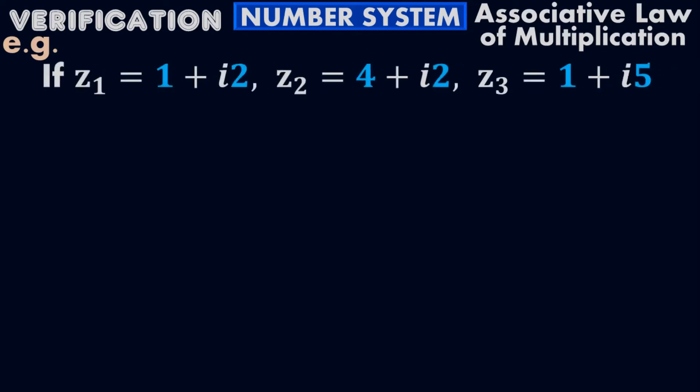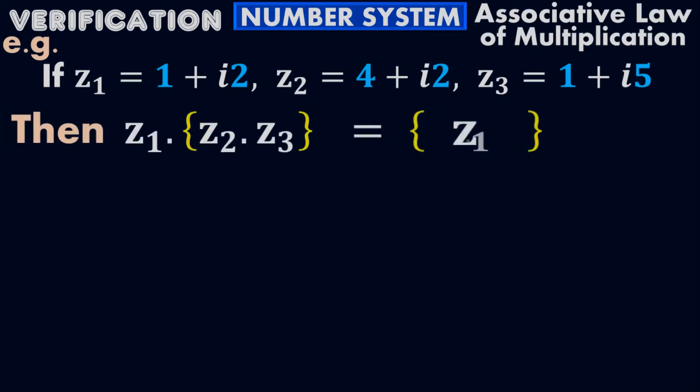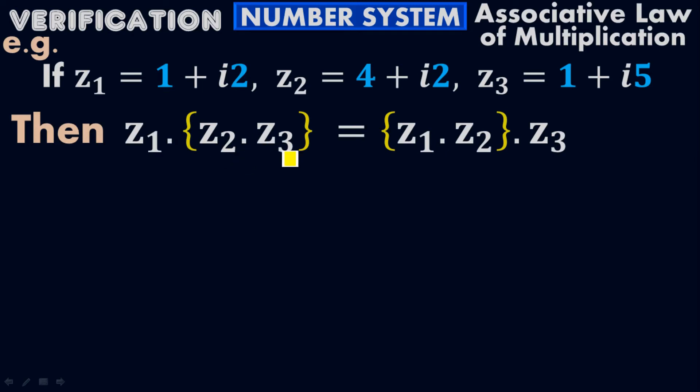Let's take a numerical example applying the associative law of multiplication. Let Z₁ = 1 + 2i, Z₂ = 4 + 2i, Z₃ = 1 + 5i. Then (Z₁ · Z₂) · Z₃ = Z₁ · (Z₂ · Z₃) according to the associative law of multiplication.